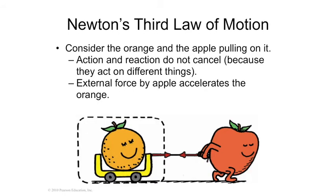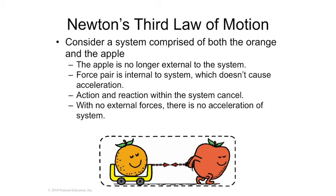So Mr. Apple is pulling Susie Orange in the cart because the apple is exerting a force on the ground, the ground is pushing the apple forward, and as long as he has enough strength, he can pull the cart. It's an external force that has to move a system. You can't move a system from within itself. If you consider the orange and the apple together as a system, both would have to be accelerated by an external force.